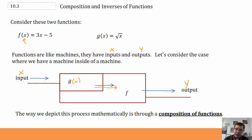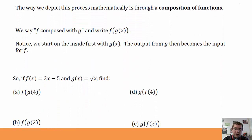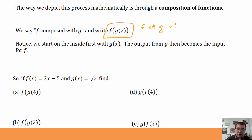The way we depict this process mathematically is through what's called a composition of functions. We say f is composed with g, and write f of g of x. Notice that we start on the inside first with g — that's where x goes first. The output of g becomes the input of f.